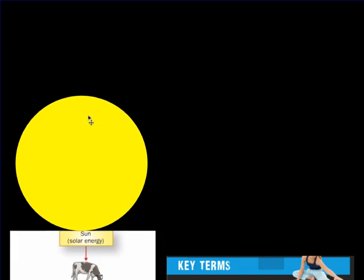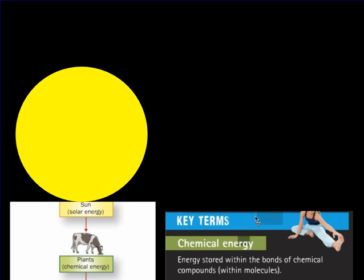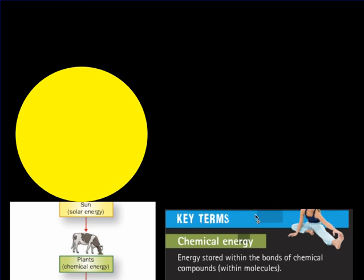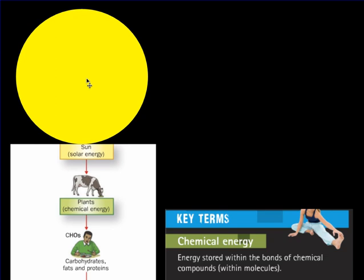Plants are able to convert that light energy into chemical energy. Chemical energy is simply energy stored within the bonds of chemical compounds within molecules. When we eat plants, or even when we eat animals that have eaten the plants, our body will store that energy as carbohydrates, fats, or proteins. These are chemical compounds made up of carbon, hydrogen, and oxygen bonds, and it's those bonds that store the energy that we're going to use for muscle contraction.